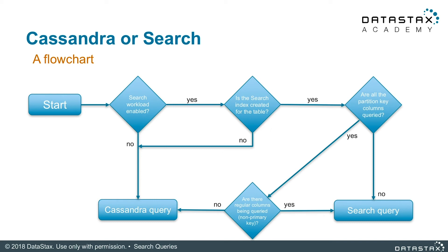The first branching point asks if search workload is enabled — if it is not, we'll be using a Cassandra query. If it is enabled, we come to the next branching point that asks if we have a search index created. If we don't, we're back to a normal Cassandra query. If we do have a search index enabled, then the next branching point asks if all the columns queried are the columns in the partition key. If yes and no other columns are added, then a regular Cassandra query will be executed. If not all partition key columns are included, or there are regular columns being queried, then we will use a search query.